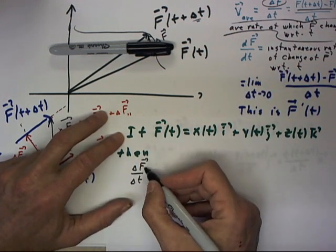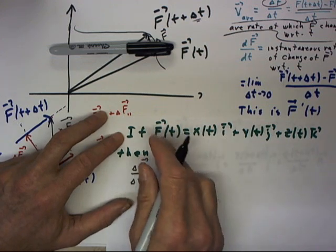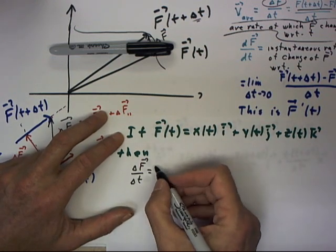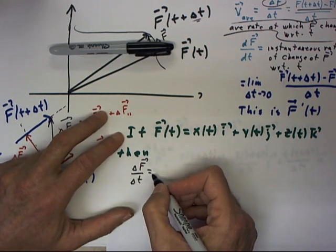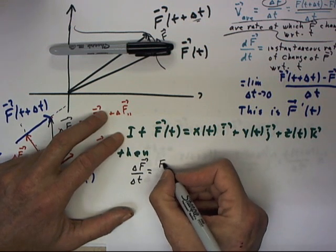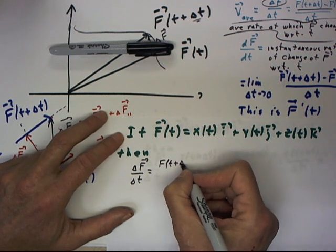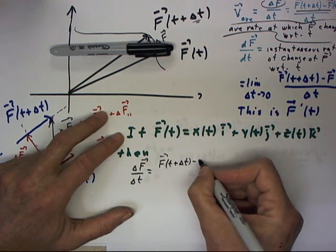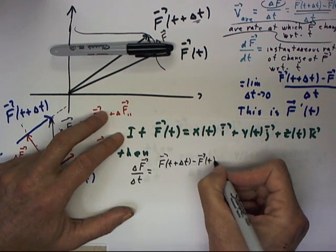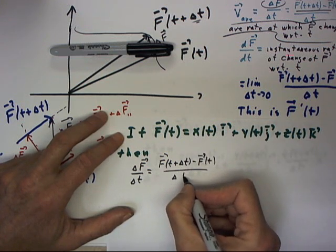So let's start by writing what we would mean by delta f over delta t for this function. Well, delta f over delta t of course is f of t plus delta t minus f of t divided by delta t.